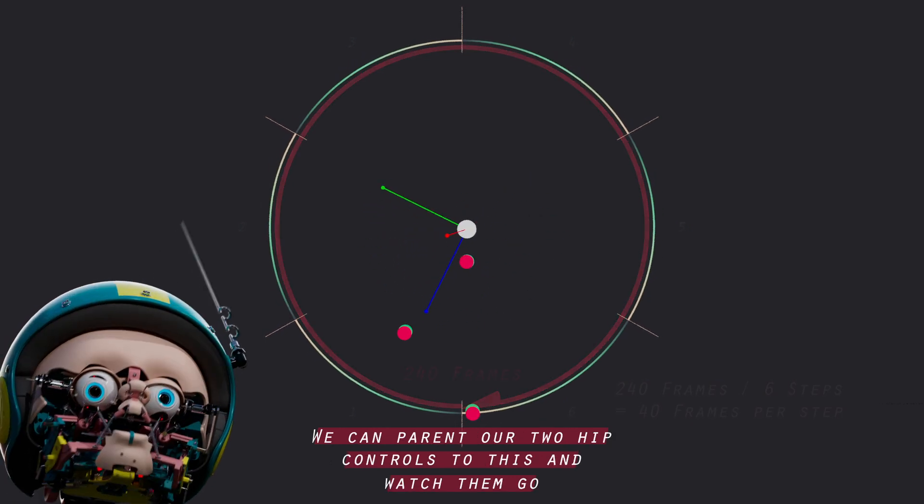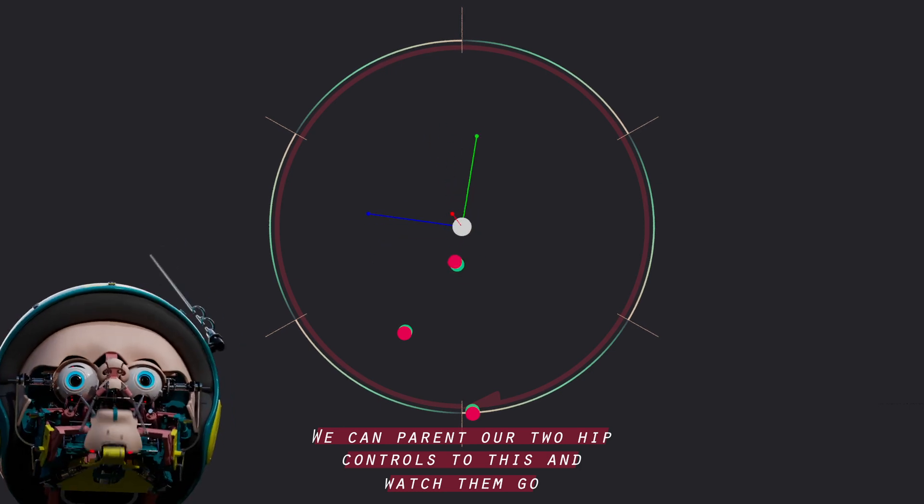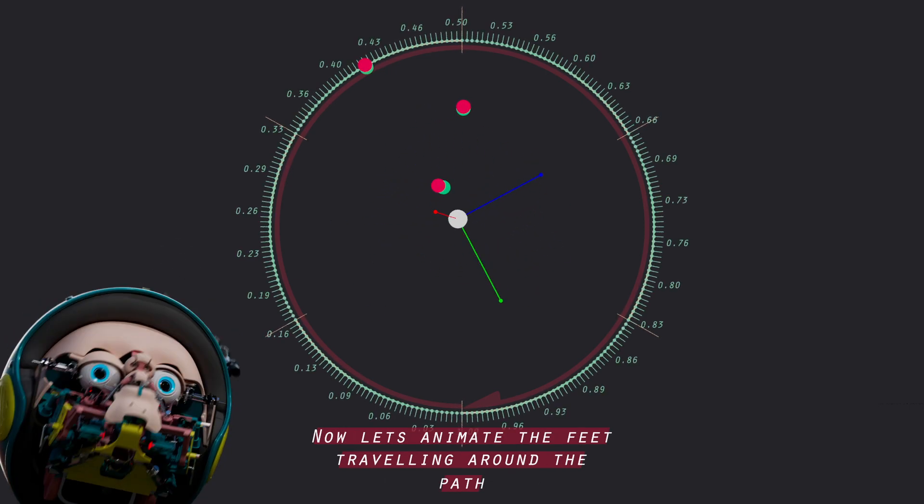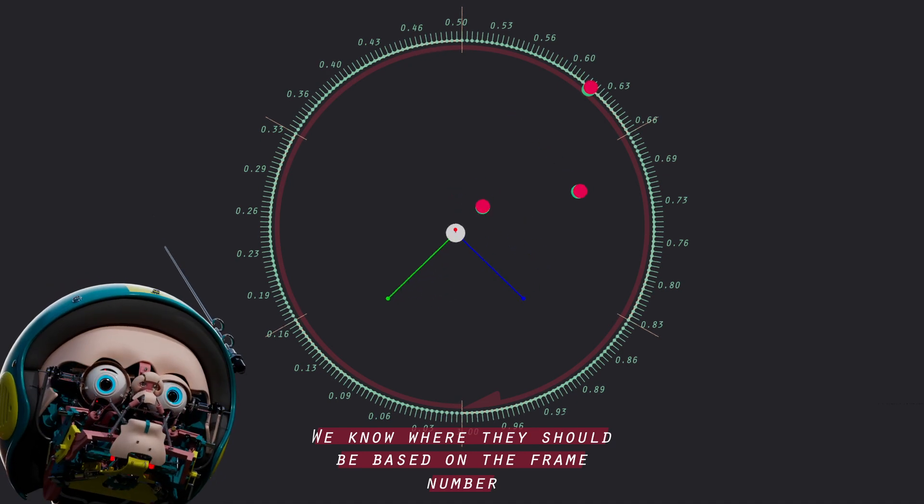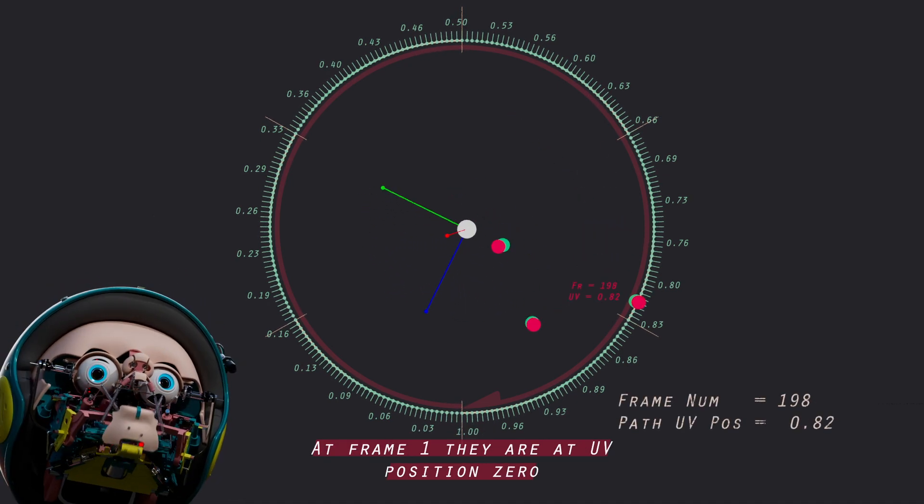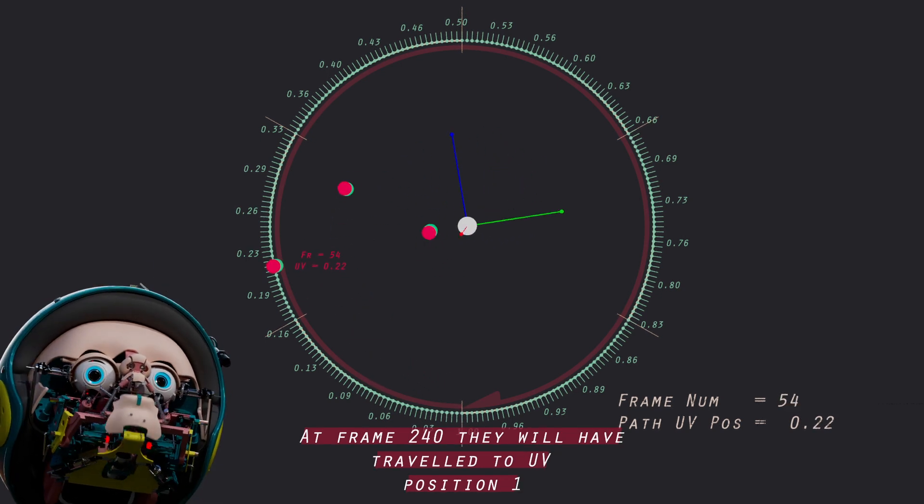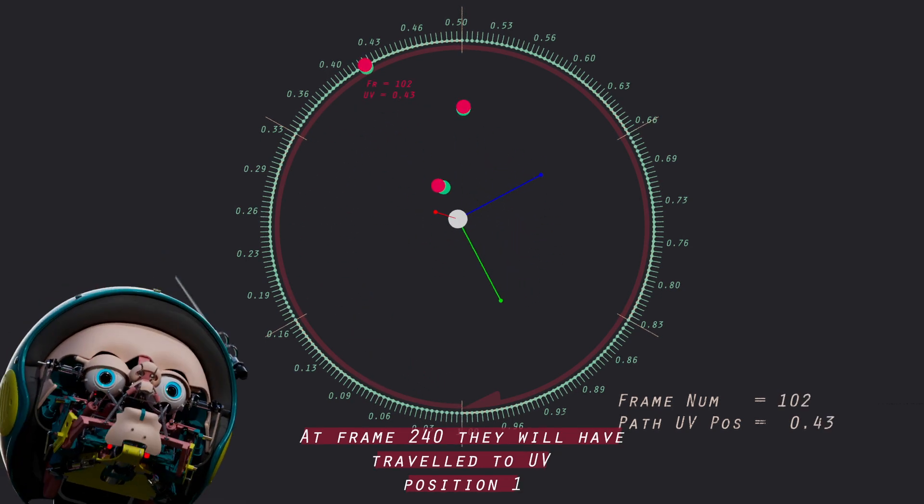We can parent our two hip controls to this and watch them go. Now let's animate the feet traveling around the path. We know where they should be based on the frame number. At frame 1 they are at UV position 0. At frame 240 they will have traveled to UV position 1.